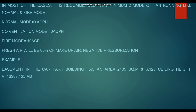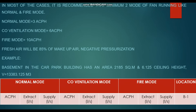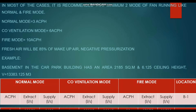Now we will see one simple example first before going into practical difficulties. For example, we have a basement car park with an area of 2,185 square meters and a ceiling height of 6.125 meters, giving a total volume of 13,383.125 cubic meters. We will calculate three operating modes: normal mode at 3 ACH, CO ventilation mode at 6 ACH, and fire mode at 10 ACH.